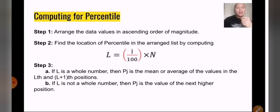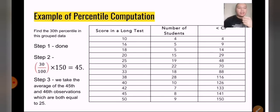For step three, if L is a whole number, then percentile is the mean or average of the values in the L location plus one position. Now, if L is not a whole number, then percentile is the value of the next higher position. In order for you to better understand this, I'll give you an example.